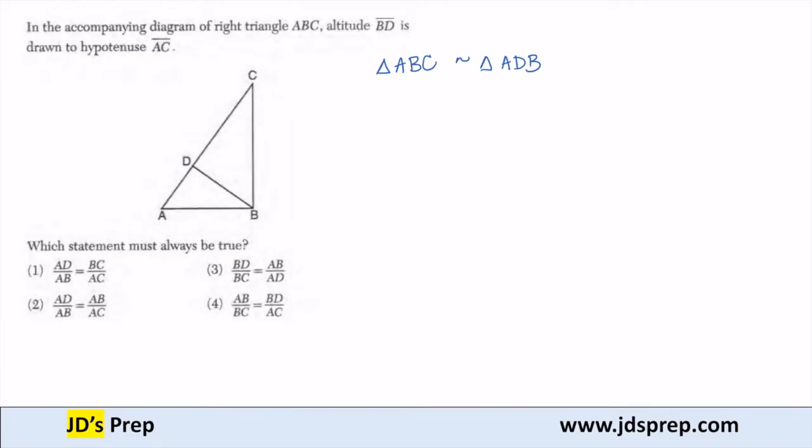If it helps, you can draw triangle ADB next to it. Here's B, D is our right angle, and A is here.